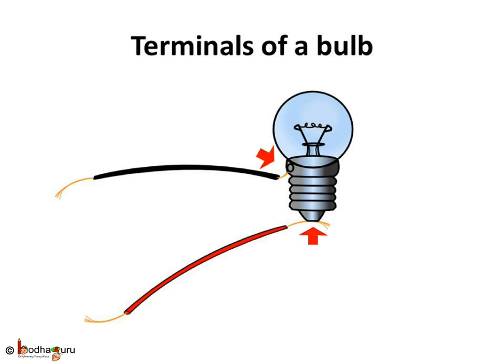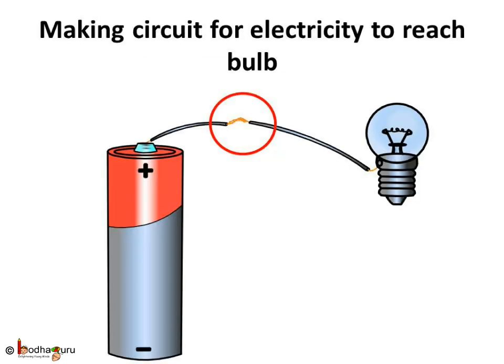So, like a cell, the bulb also has two terminals. The base of the bulb and the metal tip of the base are the two terminals of the bulb. Both of these terminals have to be connected to different ends of the cell so that the current can flow through both the terminals of the cell to make the bulb glow. Now we know where to connect the wires in a bulb. Let us help the electric current reach the bulb; otherwise, the cell would be useless and wouldn't make the bulb glow.